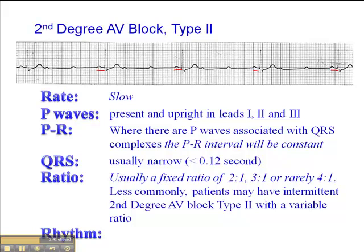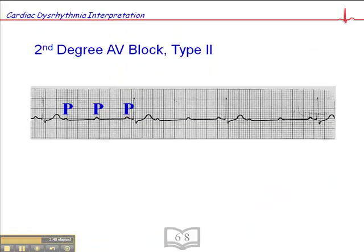Typically the rhythm is regular, except when we have an intermittent second-degree AV block type 2. In this case, we have 1, 2, and 3 P waves per QRS. So this would be a second-degree AV block type 2 with a 3 to 1 ratio.